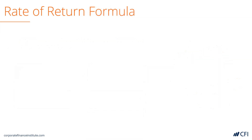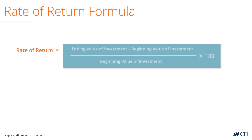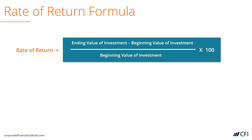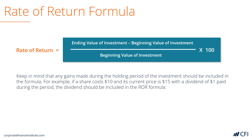The formula for calculating rate of return is the ending value of the investment minus the beginning value of the investment, all divided by the beginning value of the investment, times 100. Keep in mind that any gains made during the investment period should be included.